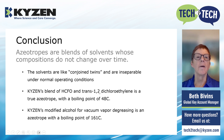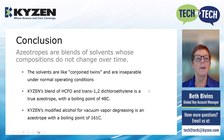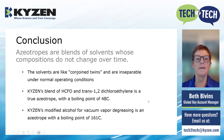In conclusion, azeotropes are blends of solvents whose compositions do not change over time. I like to describe them as conjoined twins — very difficult to separate. Under normal operating conditions, they will not separate. For reference, at Kaizen we have a blend of an HCFO and trans-1,2-dichloroethylene that is a true azeotrope with a boiling point of 48°C, and our modified alcohol used in vacuum vapor degreasing is also an azeotrope.